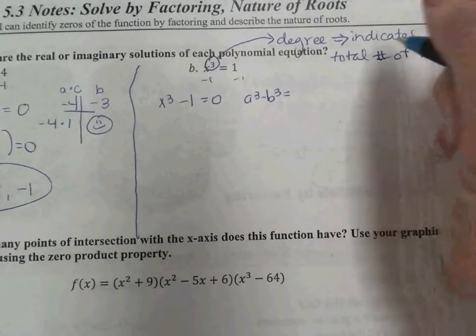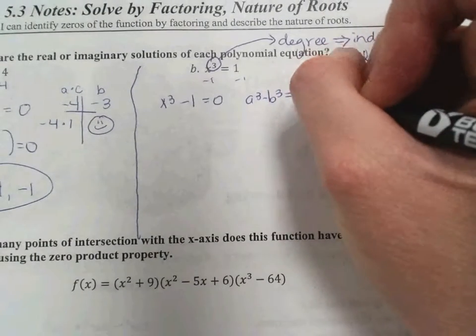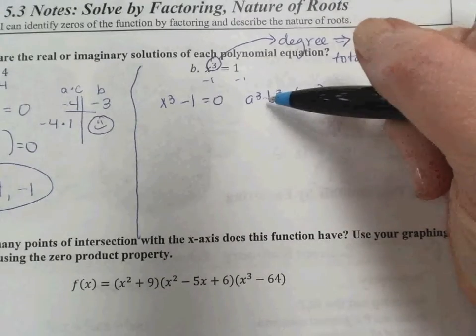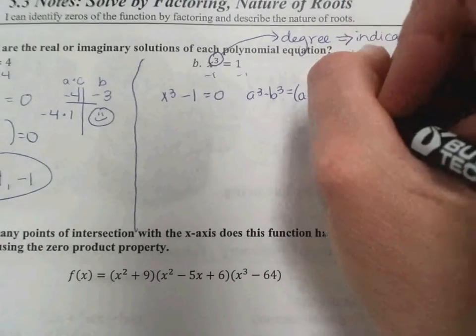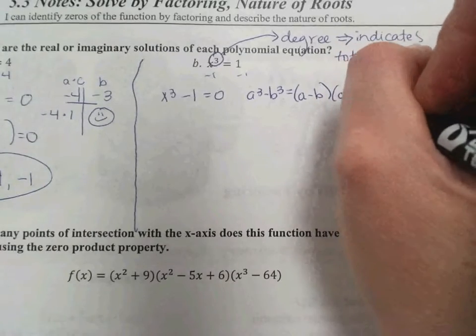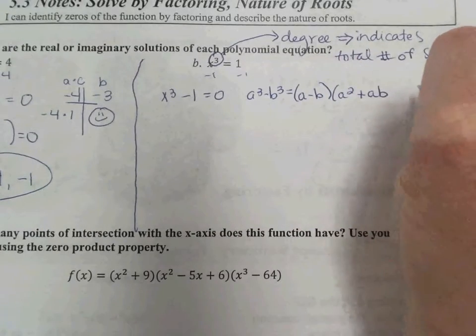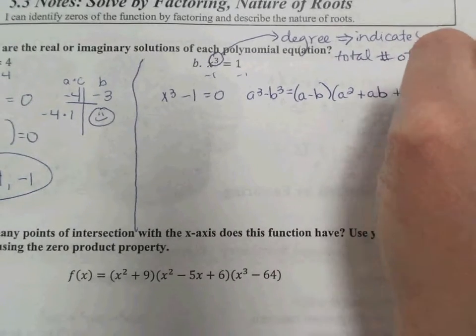Equals a minus b. Notice the minus sign and the minus sign. And then we have a squared plus a times b plus b squared.